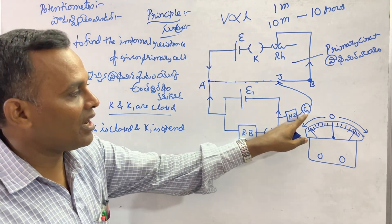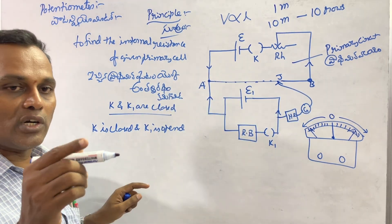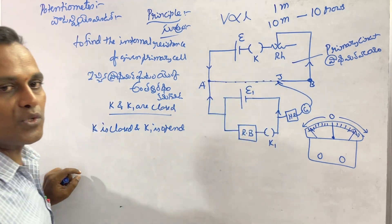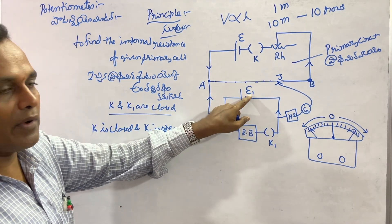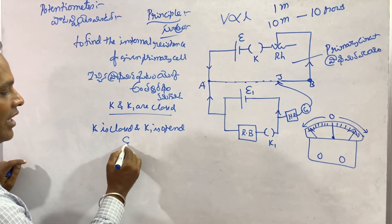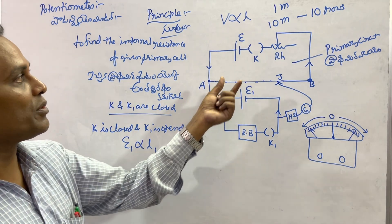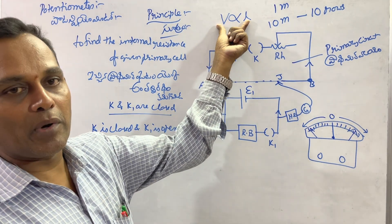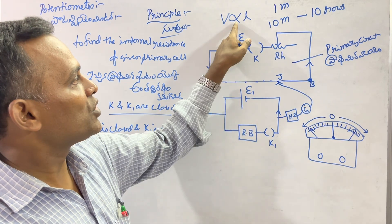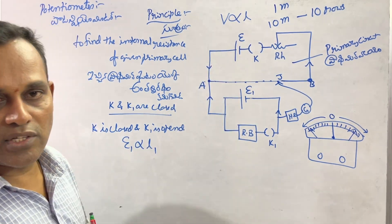When the galvanometer shows zero deflection (null deflection), the length at that point is measured. At this point, with battery EMF E1 connected, the balancing length is noted as L1. So E1 is proportional to L1.